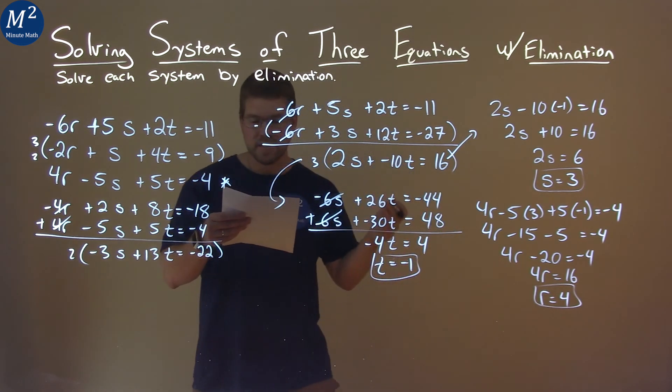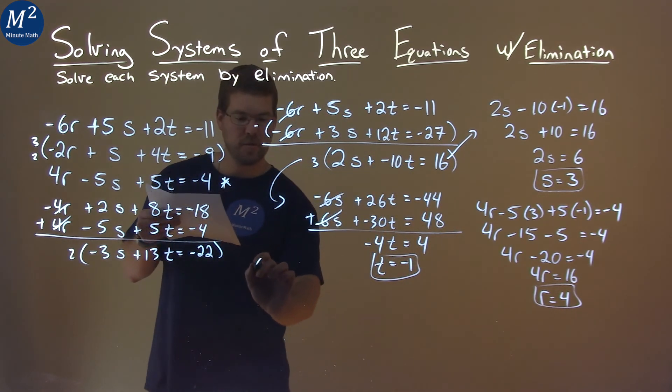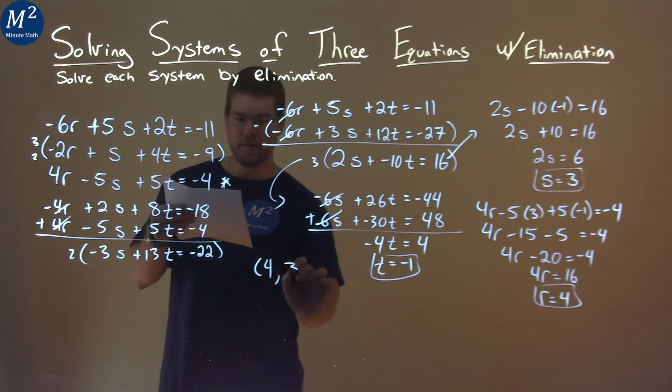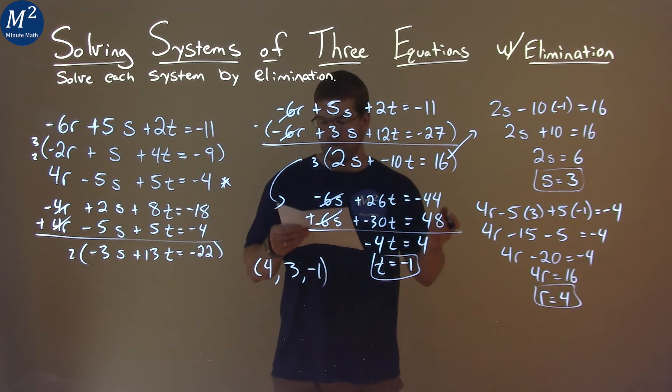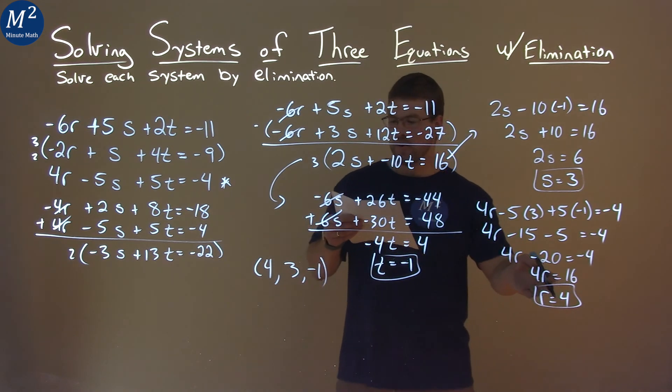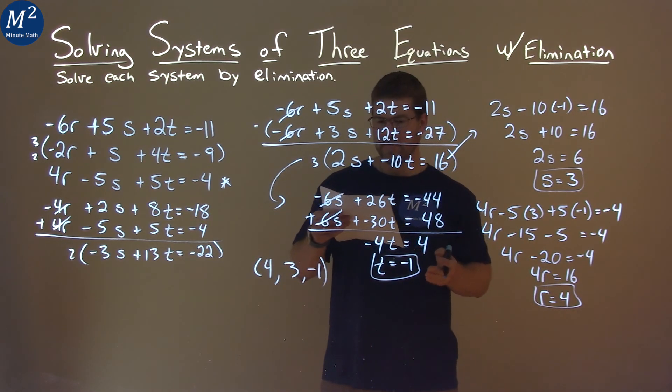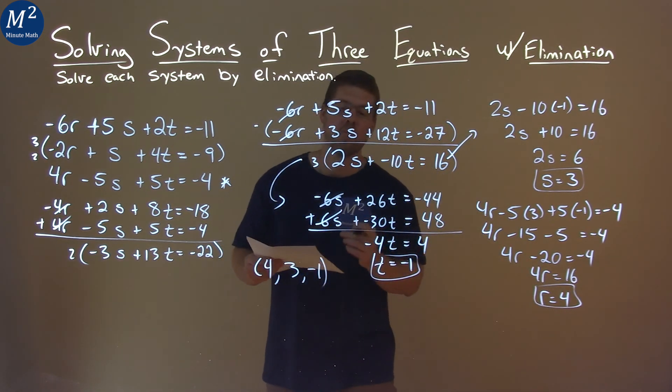So we have our r, s, and t values. We can write this as a coordinate point: 4, 3, negative 1 in the order they give it to us. So our final answer here is r is 4, s is 3, and t is negative 1.